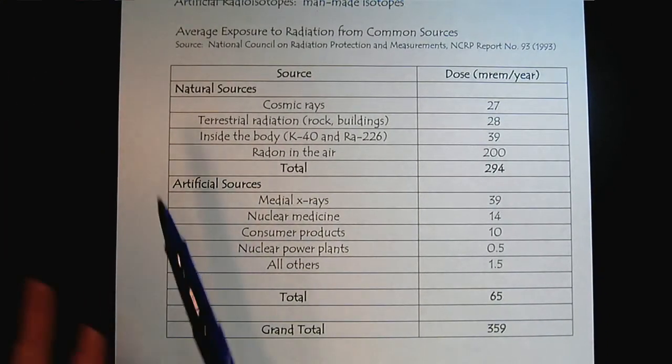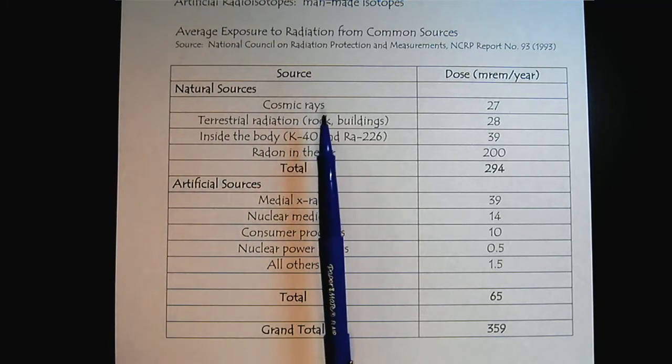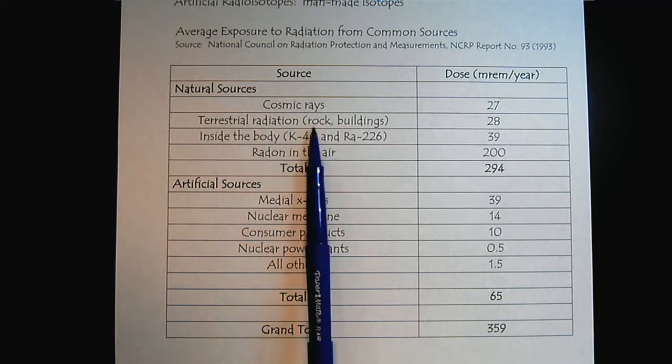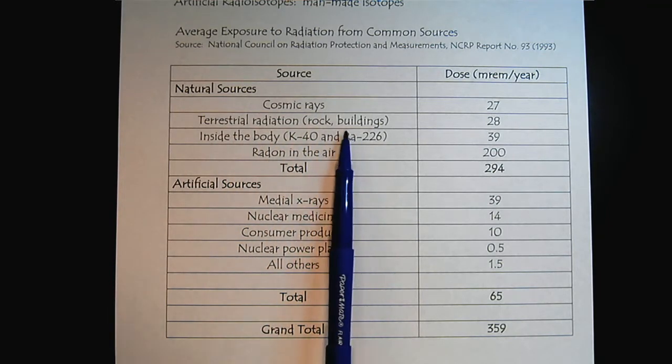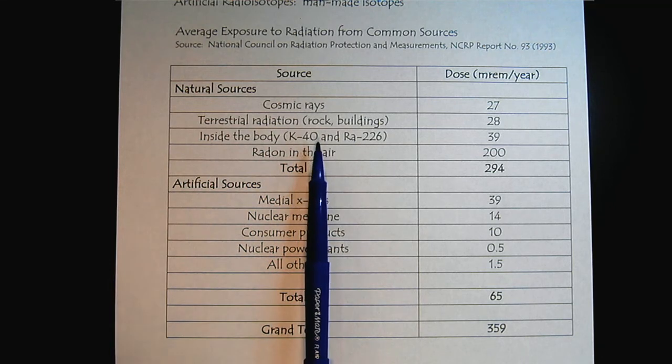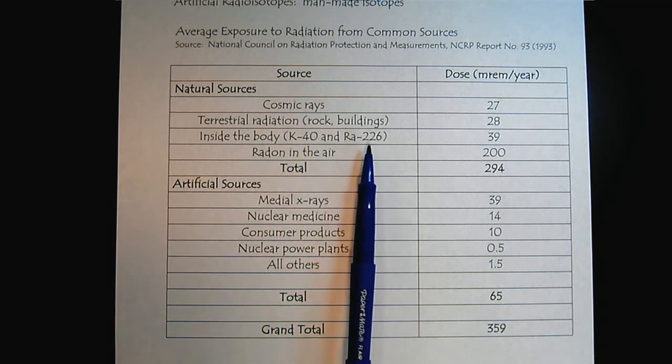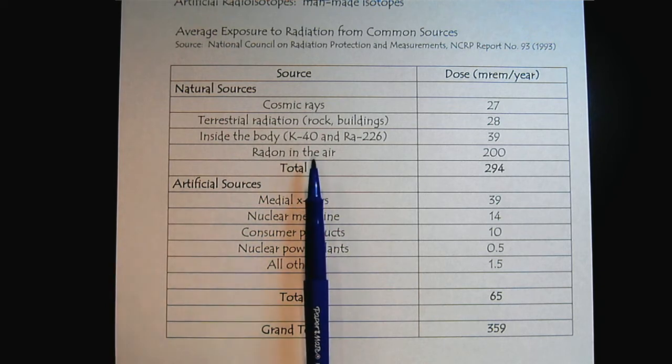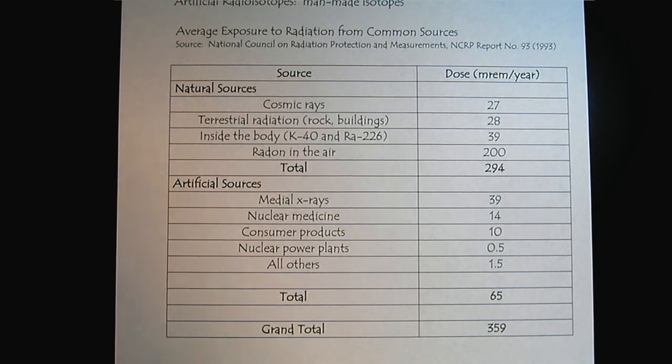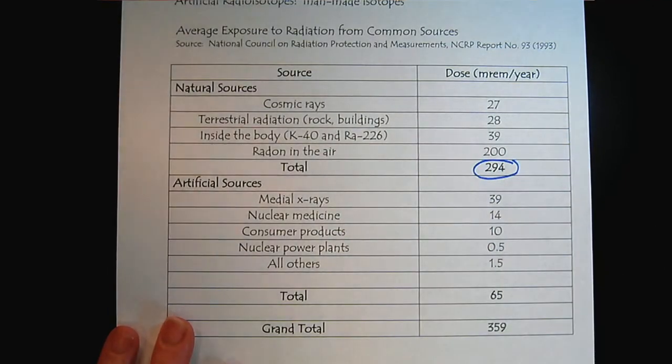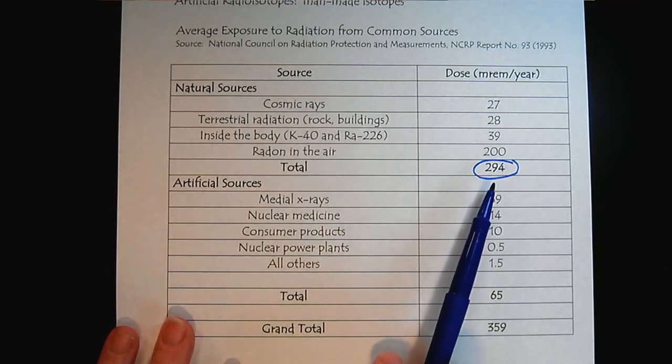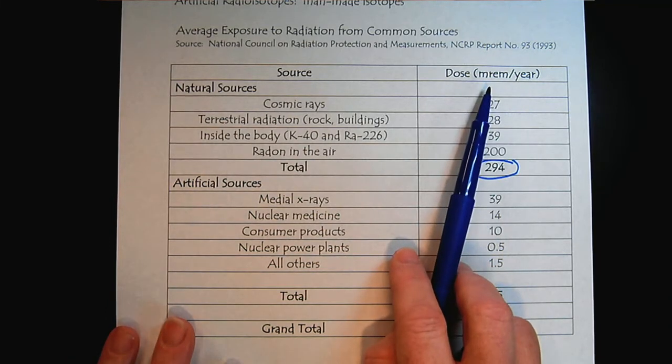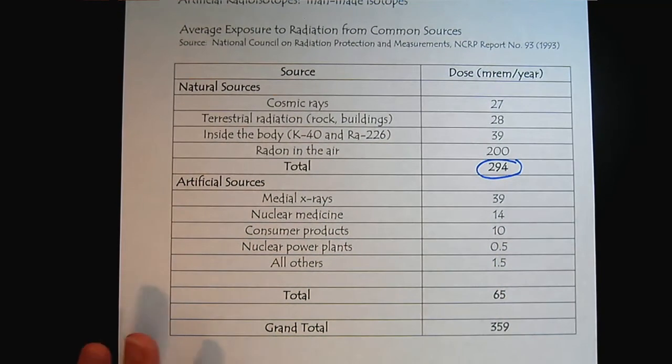So look at all the natural sources. Cosmic rays penetrating through our atmosphere, terrestrial radiation from rocks and buildings. Inside our body, we have naturally occurring isotopes, potassium and radium, and then there's radon in the air. So being alive on Earth, we are going to be exposed to approximately 294 millirems per year. We'll talk about these units in a future tutorial.